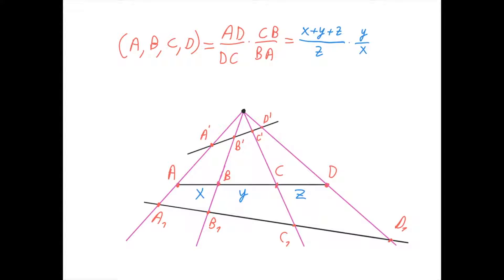And this would also be true if the black line appears right here, in which case we have a1d1 divided by d1c1 times c1b1 divided by b1a1 equals the same value as the cross ratio of a, b, c, d. So no matter where we choose the line — it could be like this, the cross ratio would be preserved; it could be like this, the cross ratio would be preserved; it could be on the other side — the cross ratio would also be preserved. So the cross ratio of these four points would be the same as the cross ratio of these four projected points.